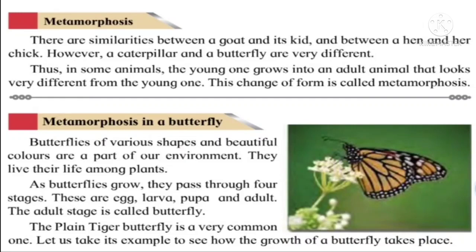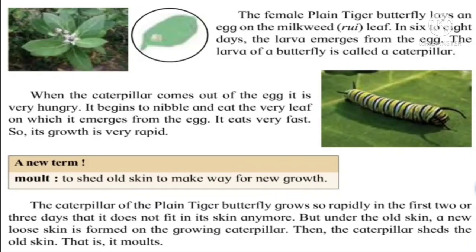Now we are going to study the stages of the female plain tiger butterfly. This butterfly lays eggs on a milkweed leaf — you can see a small egg on the milkweed leaf in the picture. After six to eight days the egg goes into the next stage, that is the larva stage — the second stage, also called the caterpillar. Slowly from the egg comes out the larva, that is the caterpillar.